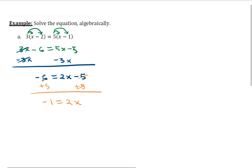Last but not least, we'll go ahead and divide both sides by 2. So on the left, we'll just have the fraction negative 1 half. And on the right, we'll have x isolated.